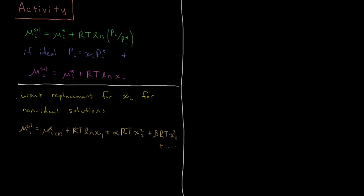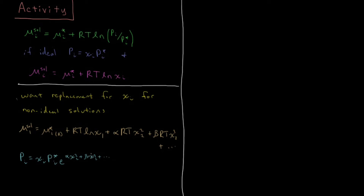We can refactorize all the additional terms and write an expression for the vapor pressure of component i. That vapor pressure equals the mole fraction times the vapor pressure of the pure liquid — the Raoult's law part for ideal solutions — with all the non-ideal behavior added on in an exponential: e to the power of (α χ₂² + β χ₂³ + γ χ₂⁴ + ...).